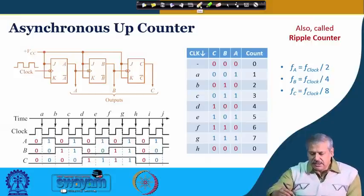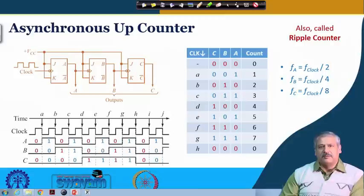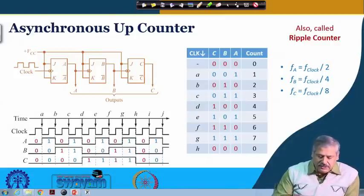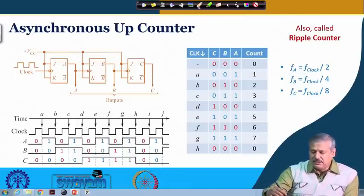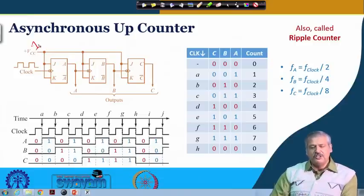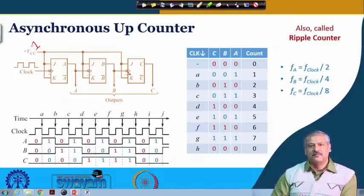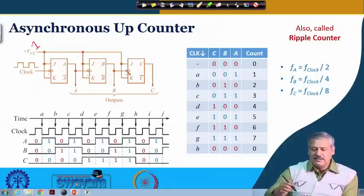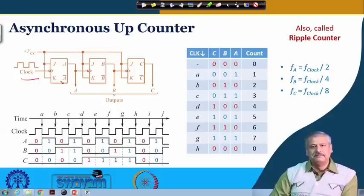For the asynchronous up counter, we have a circuit made up of JK flip-flops. Both inputs J and K of each flip-flop are connected to 1, tied to VCC. So each flip-flop, when it gets a trigger at the negative edge of the clock, is supposed to toggle. The clock is given here only to the first flip-flop — that is what makes it asynchronous; the clock is not fed to each flip-flop, only the first flip-flop gets the clock.